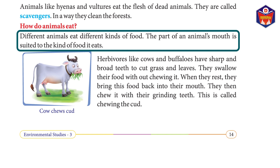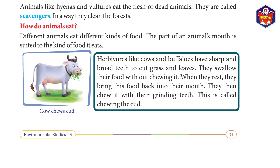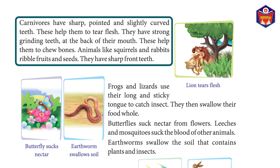Different animals eat different kinds of food. The part of an animal's mouth is suited to the kind of food it eats. Herbivores like cows and buffaloes have sharp and broad teeth to cut grass and leaves. They swallow their food without chewing it; when they rest, they bring the food back into their mouth and chew it with their grinding teeth — this is called chewing the cud. Carnivores have sharp, pointed, and slightly curved teeth to tear flesh, and strong grinding teeth at the back to chew bones.